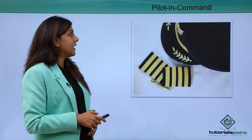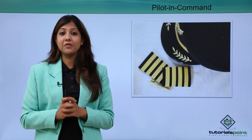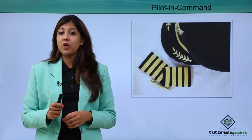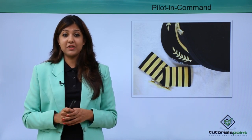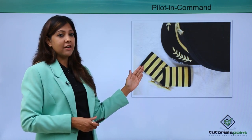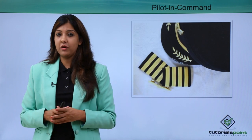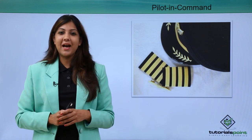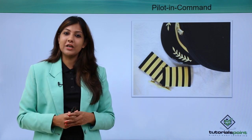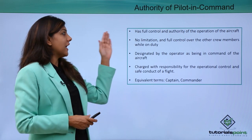The pilot in command is the head of the ship — the captain. He has full control and full authority over the entire aircraft. Whatever he says is to be followed by every person inside the aircraft, be it crew or even passengers. As you can see in the diagram, the pilot in command has four stripes on his uniform. So next time you travel by airline, look for four stripes on the pilot's shoulder.